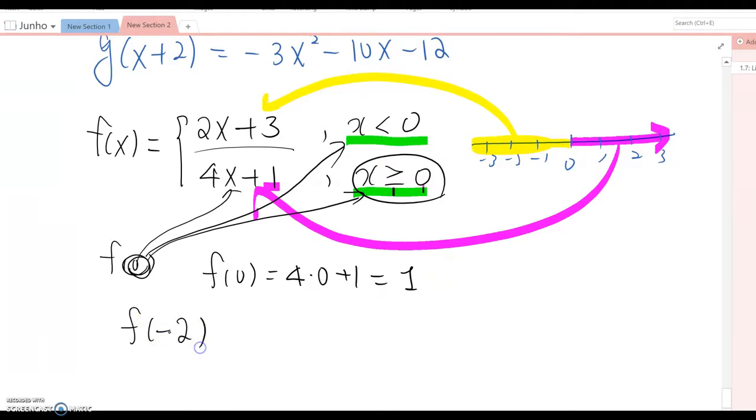Negative two - where is this value belongs to, this condition or this condition? Definitely only the first one because negative two is smaller than zero, which means you are using this function. So in this case, 2 times negative 2 plus 3 equals negative 4 plus 3 equals negative 1.